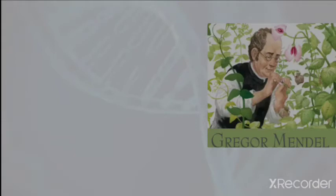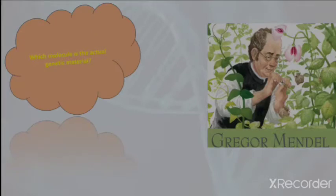You all have studied about Mendel and his famous experiment with pea plants. Mendel did experiments with pea plants for nearly 15 years, and the conclusion was that something is being transferred from one generation to another. However, Mendel was not able to identify what factor was being transmitted. This led to the key question: which molecule is the actual genetic material?